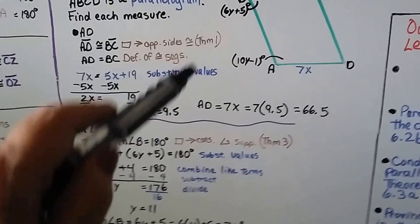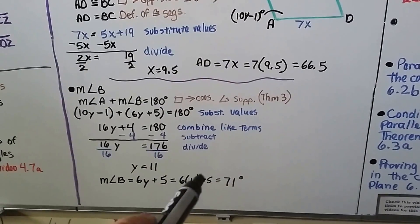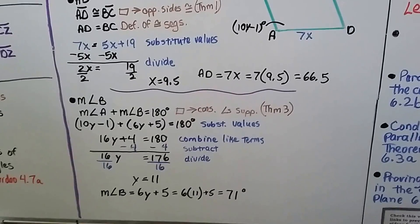Now for the measure of angle B, all we have to do is put 11 in the place of the y. We get 6 times 11 plus 5, which is 71 degrees.